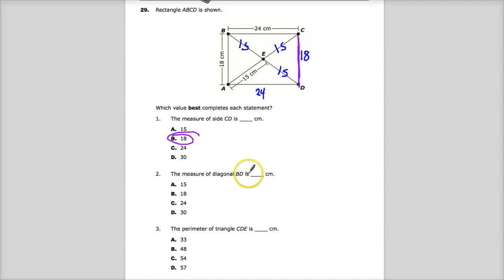The measure of diagonal BD is so many centimeters. Well, B to D goes all the way down through here. Two 15s added together gives me 30 centimeters. At least they're nice enough to keep the units the same, and they didn't make it meters where you had to adjust.